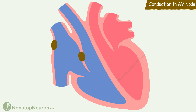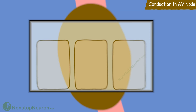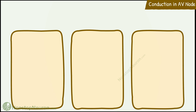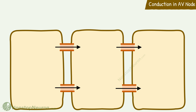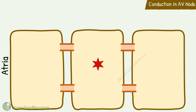Now let's see the detail of how impulse is conducted at the AV node. These are the cells of the AV node. They are connected by gap junctions which allow free passage of ions from one cell to the other. The left side is the atrial side from where impulse enters the AV node, and the right side is the ventricular side from where the impulse exits the AV node.